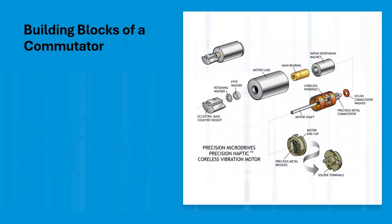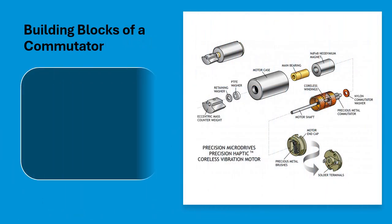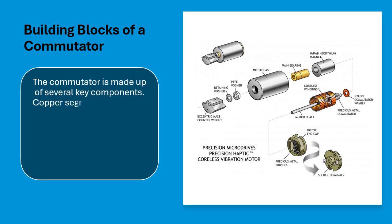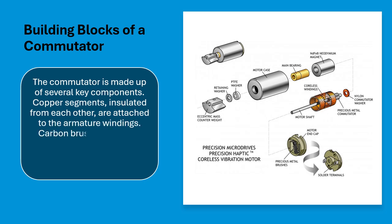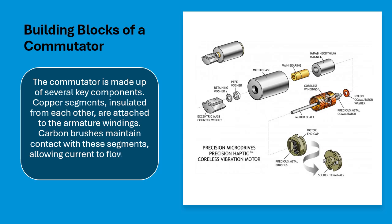Building blocks of a commutator. The commutator is made up of several key components. Copper segments, insulated from each other, are attached to the armature windings. Carbon brushes maintain contact with these segments, allowing current to flow in and out.